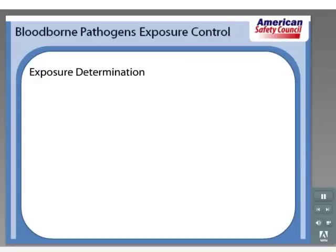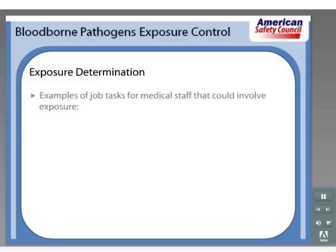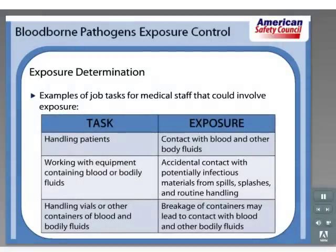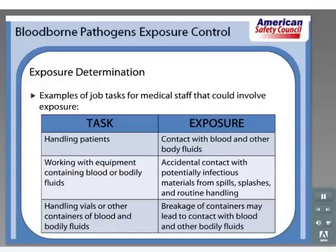Here are a few examples of job tasks for medical staff that could involve exposure to bloodborne pathogens. The task of handling patients could cause the employee to be exposed by coming in contact with blood or other body fluids. The task of working with equipment containing blood or bodily fluids could cause the employee to accidentally come into contact with potentially infectious materials from spills, splashes, and routine handling. The task of handling vials or other containers of blood and bodily fluids may result in breakage of the containers, leading to contact with blood and other bodily fluids. There are many other tasks where potential exposure is evident, but it is important to start thinking about your workplace and the job tasks where exposure is possible.